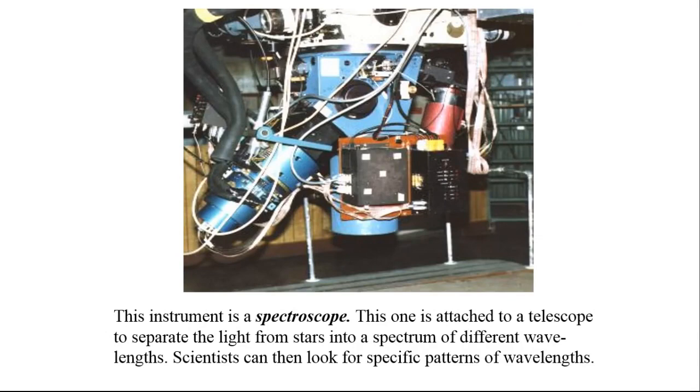This instrument is a spectroscope. This one is attached to a telescope to separate the light from stars into a spectrum of different wavelengths. Scientists can then look for specific patterns of wavelengths.